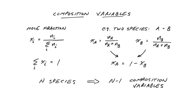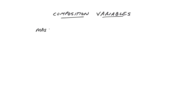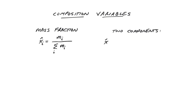Another common choice for describing composition is mass fraction, X sub i with a caret over it, defined as the mass of species i divided by the total mass. For simple molecules of known structure, the choice of mass or mole fraction is largely a matter of convenience, since one can always relate one to the other by knowing the molecular weights. However, for systems comprising large and/or ill-defined molecules like polymers, it's common to use mass fraction exclusively.